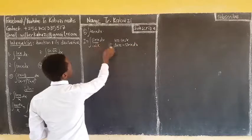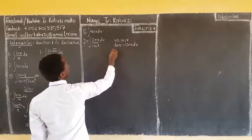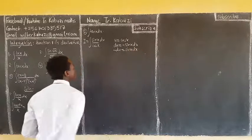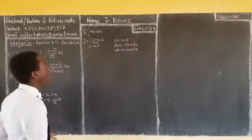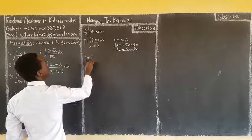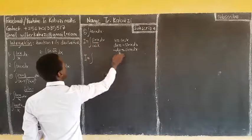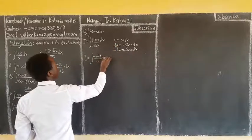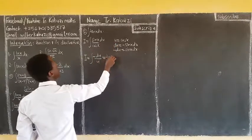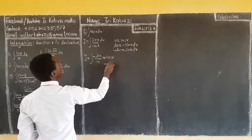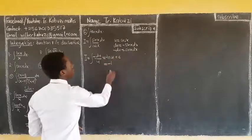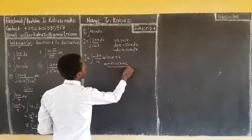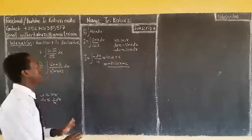Since sin(x) dx is not negative, I account for the sign: sin(x) dx equals negative du. So the integral becomes the integral of negative du over u, which gives negative ln|u| plus c. Substituting back, u is cos(x), so the answer is negative ln|cos(x)| plus c.